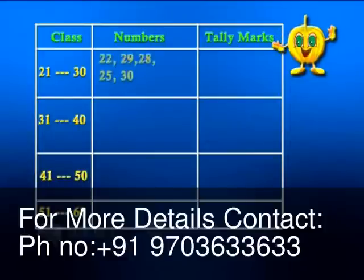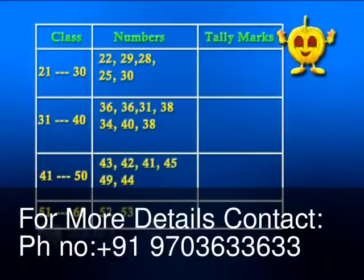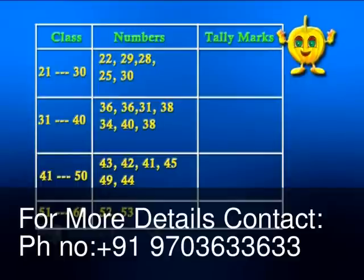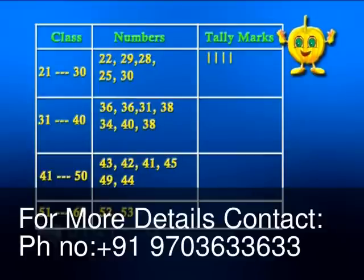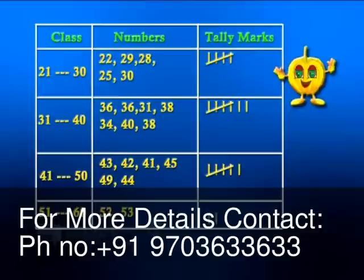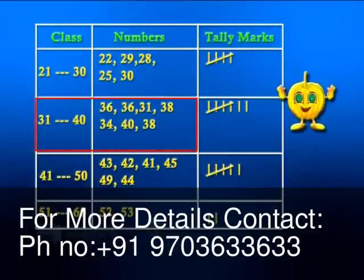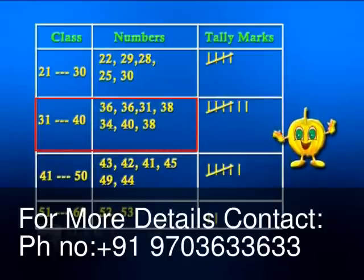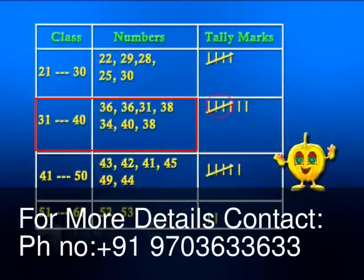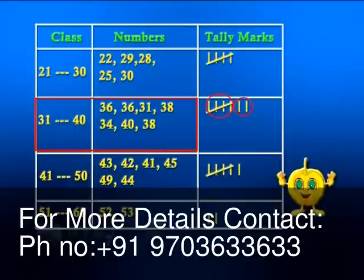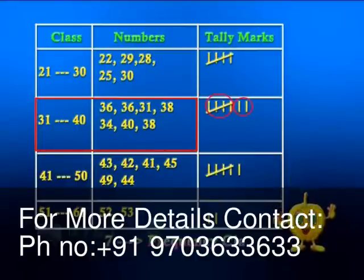Now let us fill in the numbers. While making a table like this, we can replace writing the actual numbers with a tally sign. If there are 4 numbers belonging to that class, we write four tally marks. For the 5th number, we strike out like this. We have 7 such numbers belonging to the class 31 to 40, shown by one bundle and 2 lines. This number 7 is known as the frequency of the class.